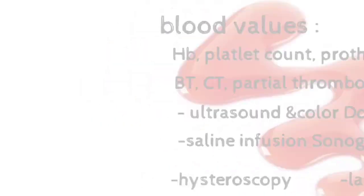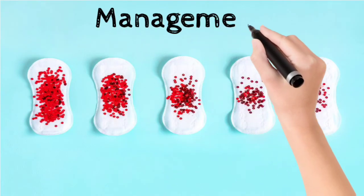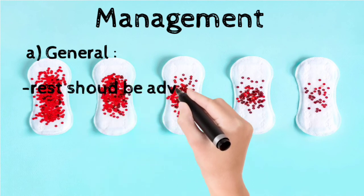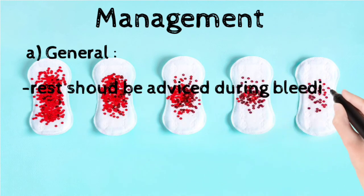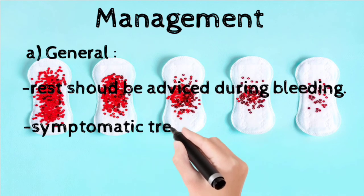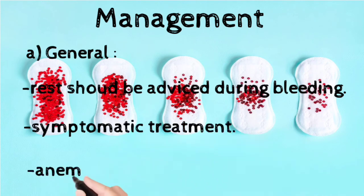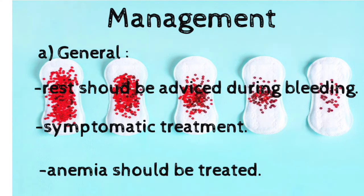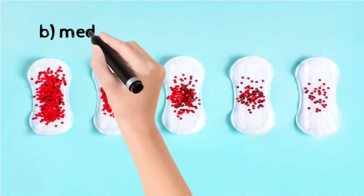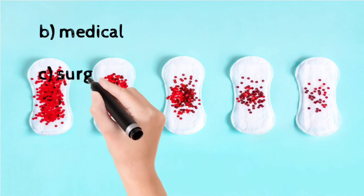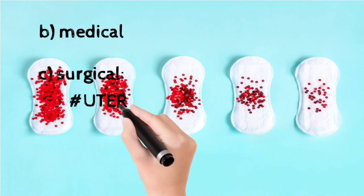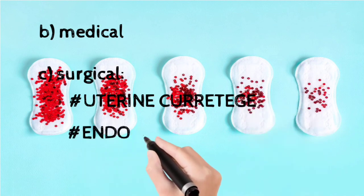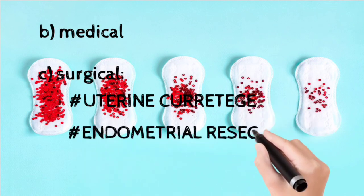In management, first we see general management. Rest should be advised during the bleeding phase. Symptomatic treatment should be given to the patient, and anemia should be treated by diet and blood transfusion. Medicinal treatment should be given. If bleeding continues after medicinal treatment, surgery should be done — uterine curettage, endometrial resection, and hysteroscopy.